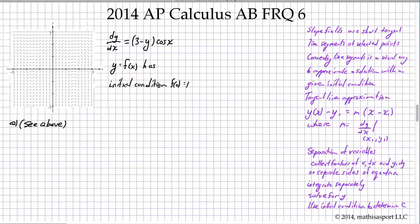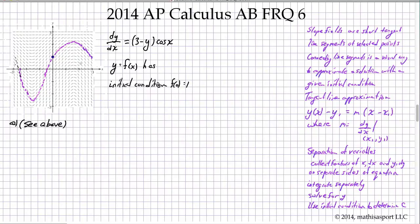It's usually some trial and error as you try to sketch a curve that connects the line segments — sometimes you don't get it quite right and have to erase and start again. So here's my sketch, done offline. I start at the point (0, 1) — that's where we know the solution goes through. We sketch following the little tangent line segments forward and backward. That's part A.